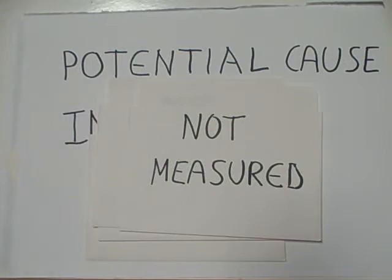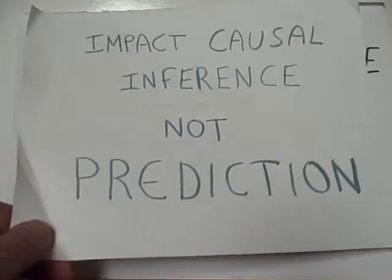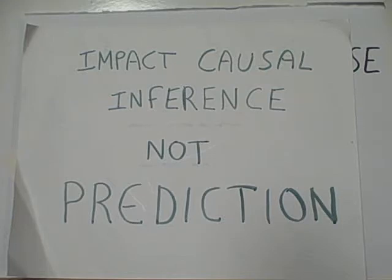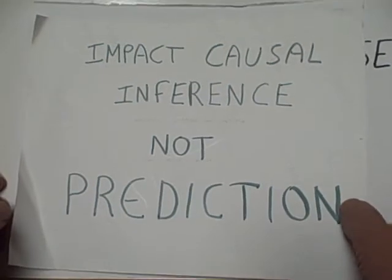The problem with these confounding variables is that they impact our ability to make causal inferences. They do not impact our ability to use predictions — just to figure out cause and effect relationships. Let's look at some examples of confounding variables.